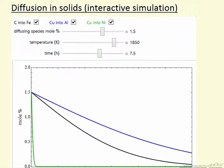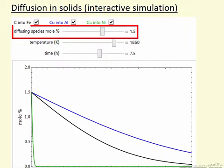This interactive simulation looks at diffusion in solids and the choice of three systems for diffusion. We can change the diffusing species mole percent at the surface, so that's this value right here.